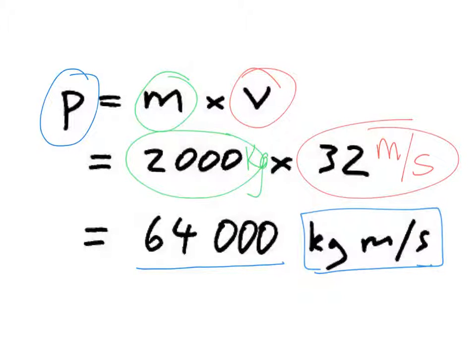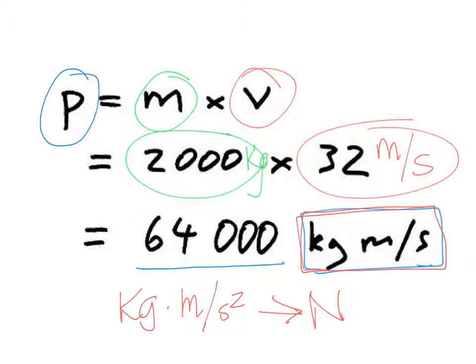And before, we multiplied kilograms times meters per second squared, and we said we can convert that to newtons. In this case, we cannot convert this to newtons, because it is simply kilograms times meters per second. So we keep all of that as our units for momentum.